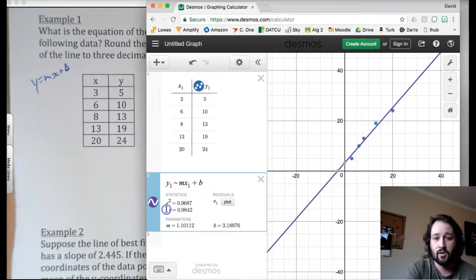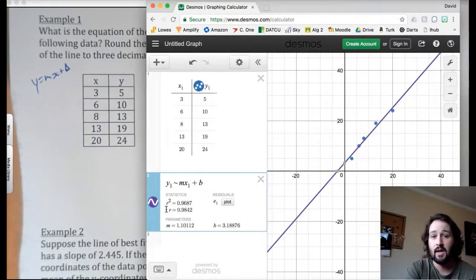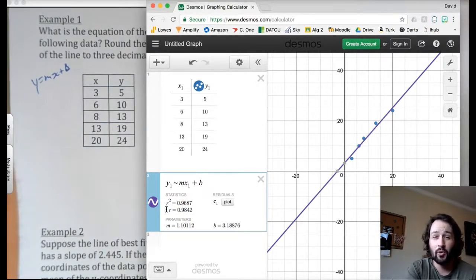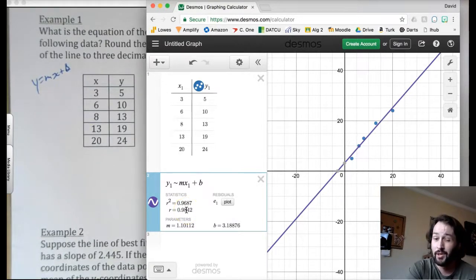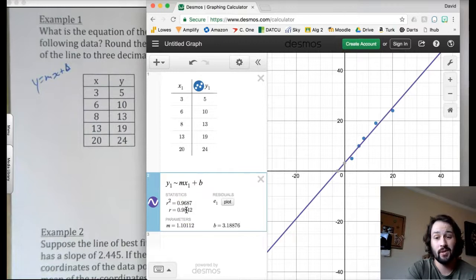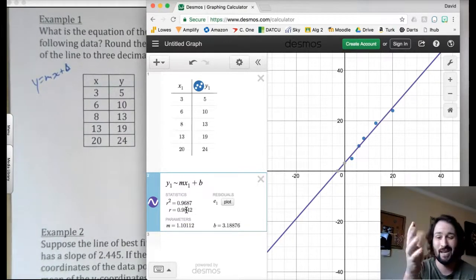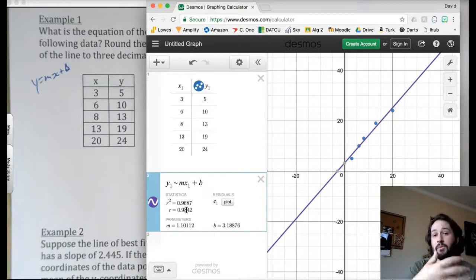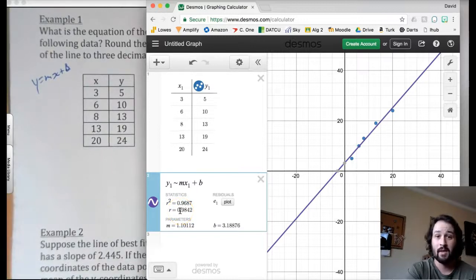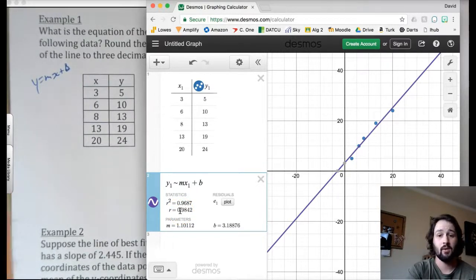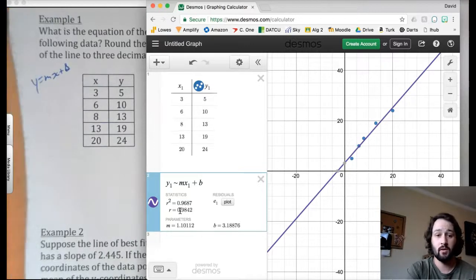This R right here, this is called our correlation coefficient. Essentially, that's just how closely this line comes to representing the data. So a 98% correlation coefficient is pretty good. Anything really below like 95 or 90 is meh, it's okay. So probably you should try another equation to get a little bit closer to one as possible. If you're exactly one, that means that that is perfect with the data. You have a very good representation of what's going on.